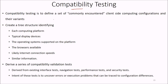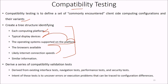Compatibility testing is defined as a set of commonly encountered client-side computing configurations and their variants. We create a tree structure to identify each computing platform, typical display devices, operating systems supported on the platform, available browsers, likely internet connection speeds, and similar information. From this, we derive a series of compatibility validation tests — covering interface tests, navigation tests, performance tests, and security tests — with the intent of uncovering errors or execution problems traceable to configuration differences.